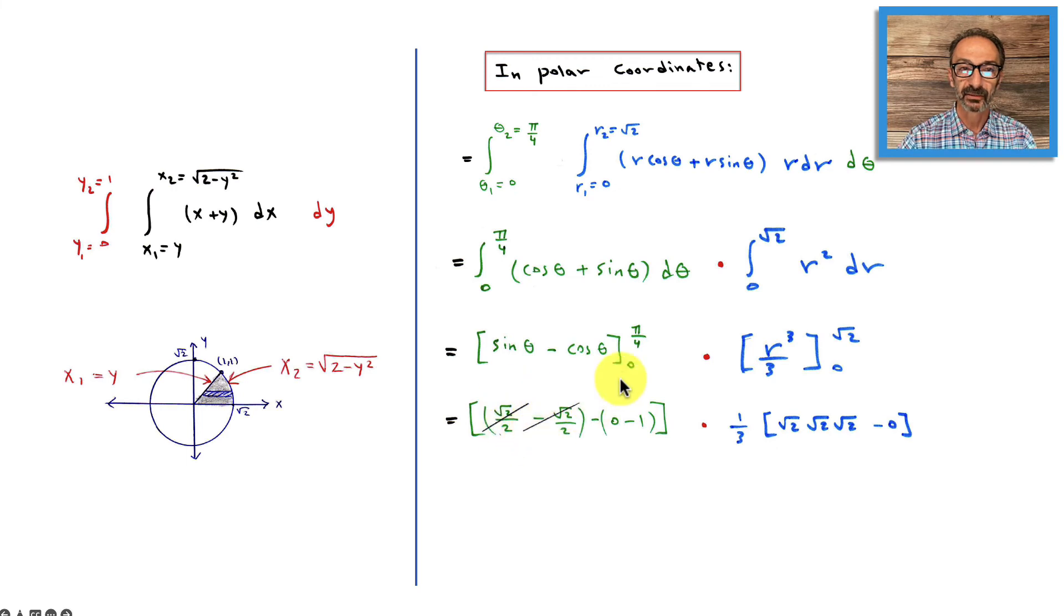That cancels. Then plug in 0 here and here. Sine 0 is 0 and cosine 0 is 1, so I have 0 minus 1 on the second part of substitution.